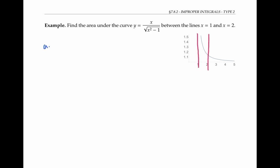That area can be described as the integral from one to two of our function. But this is an improper integral, because the function is going to infinity as x goes to one from the right. So we'll evaluate it by taking the limit as t goes to one from the right of the integral from t to two of the function.